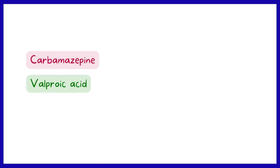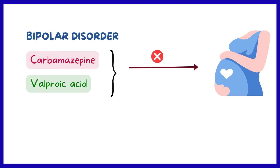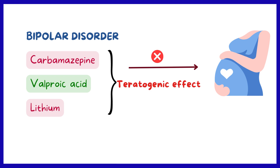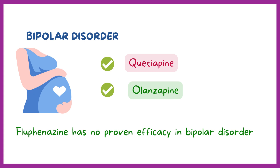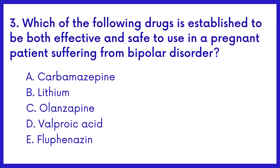Carbamazepine and valproic acid are effective in bipolar disorder but are contraindicated in the pregnant patient because of possible teratogenic effects. Lithium can also cause fetal abnormalities and should be avoided. The most conservative approach would be to treat the patient with quetiapine or olanzapine. Fluphenazine has no proven efficacy in bipolar disorder. Therefore, the answer is option C.